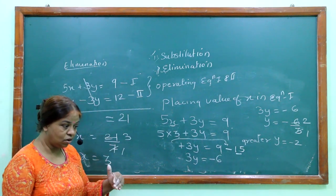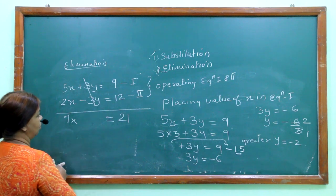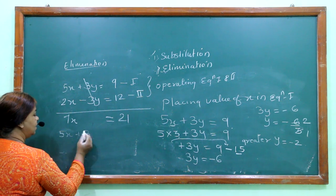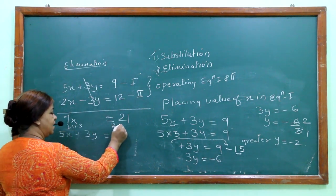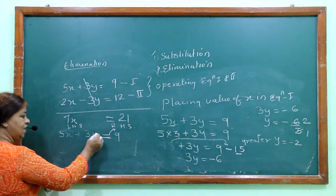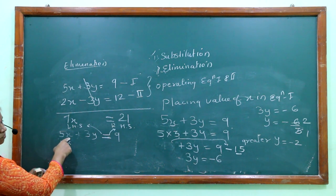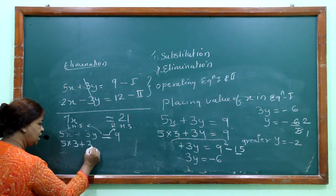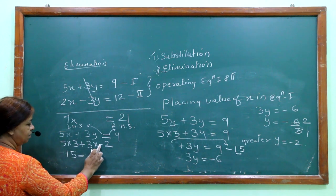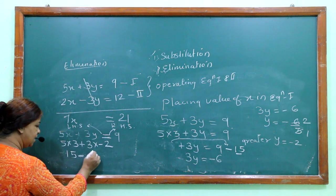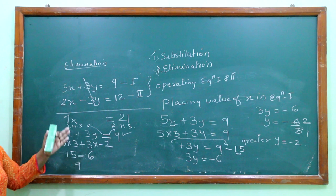To check, place x equals 3 and y equals minus 2 into equation 1: 5 into 3 plus 3 into minus 2 equals 15 minus 6 equals 9, which matches the right-hand side. The solution is correct. This was by elimination method. Solution: x equals 3, y equals minus 2.